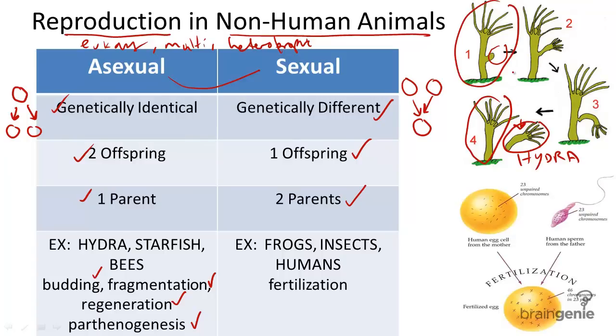In parthenogenesis, this is a different example of asexual reproduction. Take, for example, an unfertilized egg.